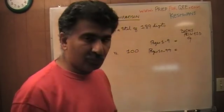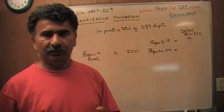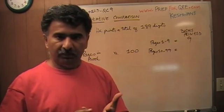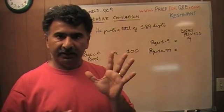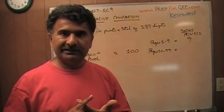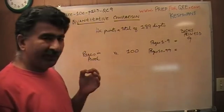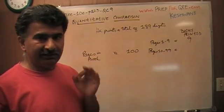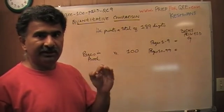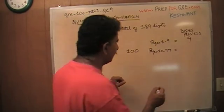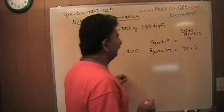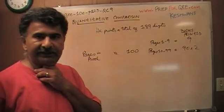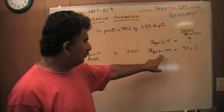So, 10 through 19, there are 10 pages from 10 through 19: 10, 11, 12, 13, 14, 15, 16, 17, 18, and 19. Similarly, 20 through 29, there are another 10 pages. 30 through 39, there are another 10 pages. All together, there are 90 pages here. 90 pages and each page will have two digits because these are two digit numbers.